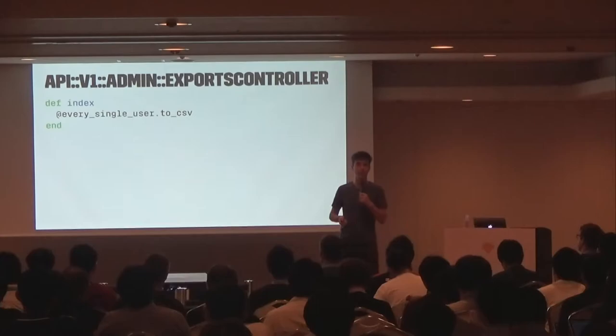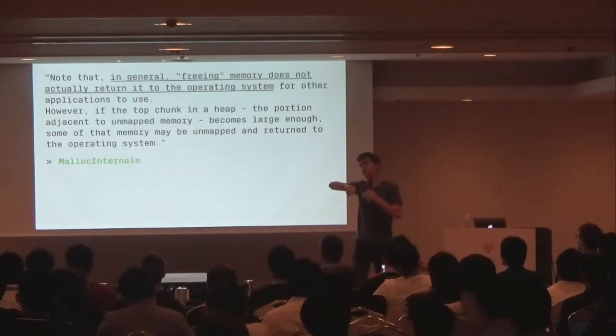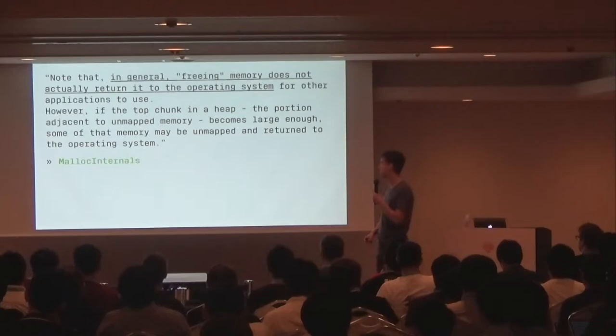Being aware of using destructive in-place modification for certain collections that may be large is also helpful. That explains the big spike, but what explains why we can't get that memory back again? Why can't we get it back from the operating system? That's malloc's fault.